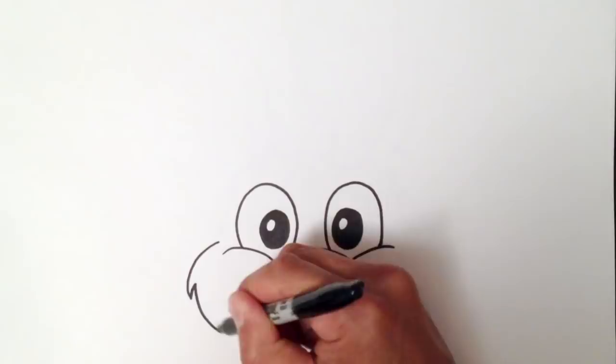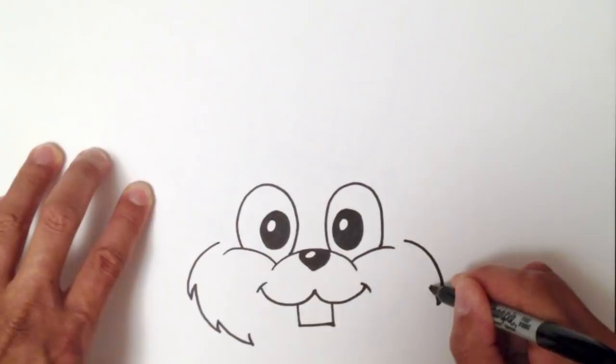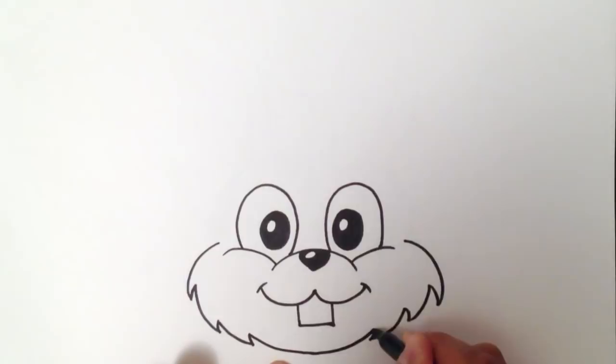On the opposite side, I'm going to do the exact same thing. Bring it out, back in, bring it out, back in, bring it out, back in. And then I'll finish the chin off with a line like so. And I'll draw the bottom part of the chin like so, just give it a little bit of weight.